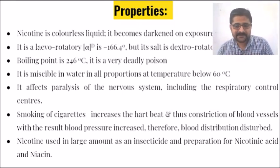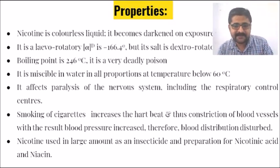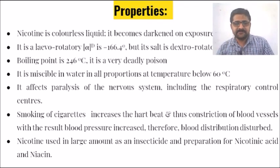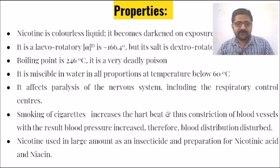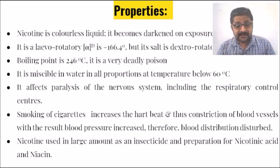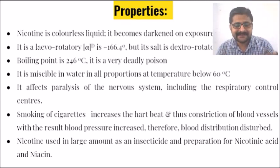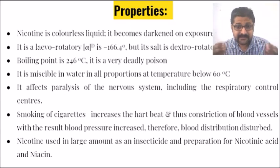Smoking a cigarette increases heartbeat and causes constriction of blood vessels, with the result that blood pressure increases. Therefore, blood distribution is disturbed. Nicotine is used in large amounts as an insecticide and in the preparation of nicotinic acid and niacin. So friends, the actual use of nicotine is as an insecticide — think about it.